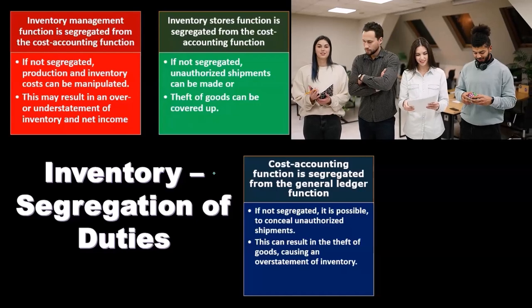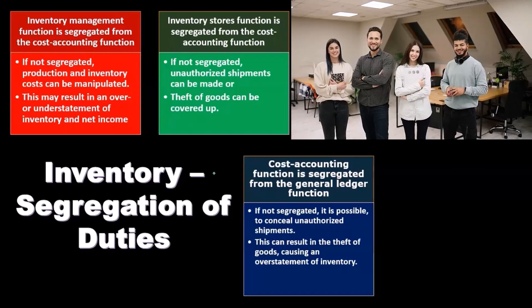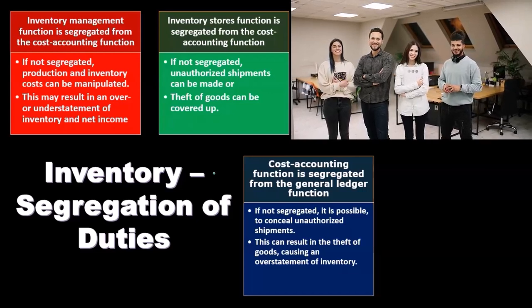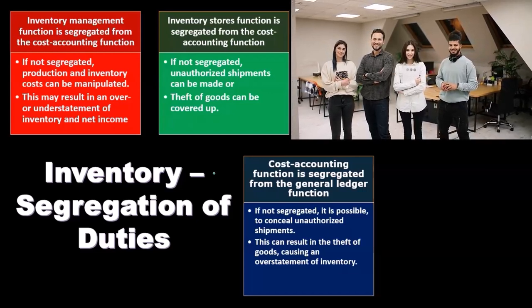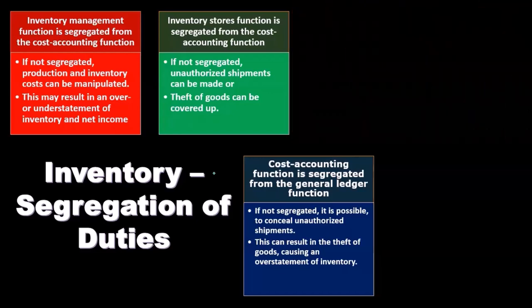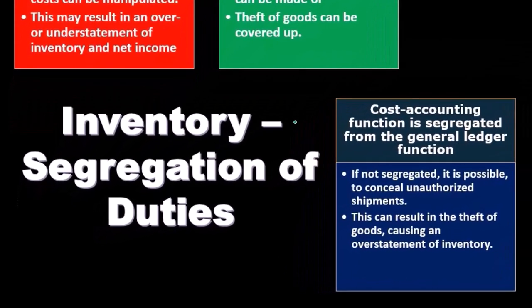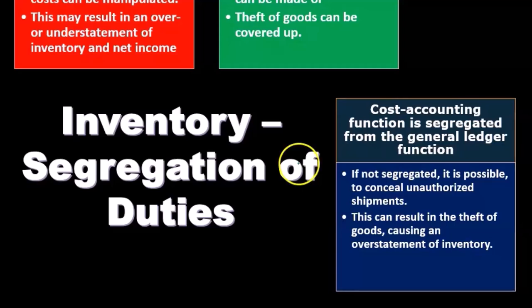If duties are not separated, someone may realize they have the opportunity to commit fraud and not get caught. If that's coupled with a personal problem — like financial difficulties — they're more likely to commit fraud. We'd rather not have that temptation present at all, so separation of duties and fraud prevention controls are essential.